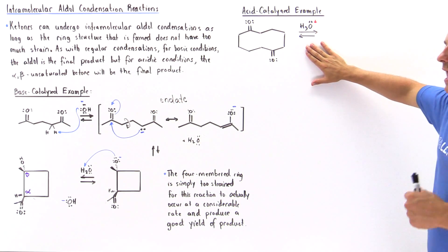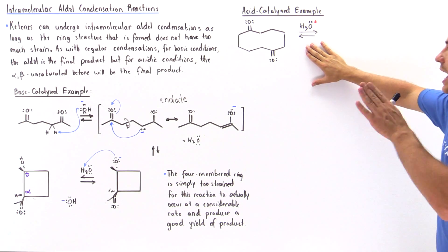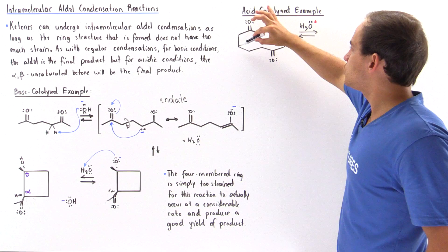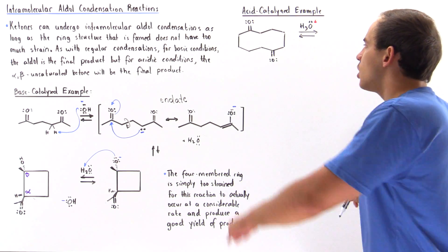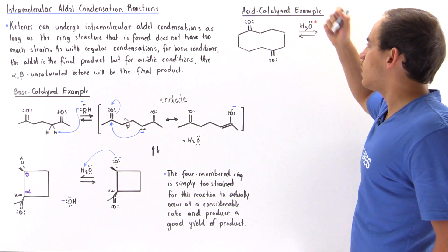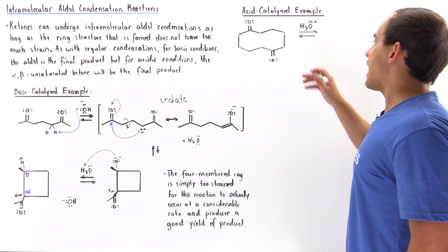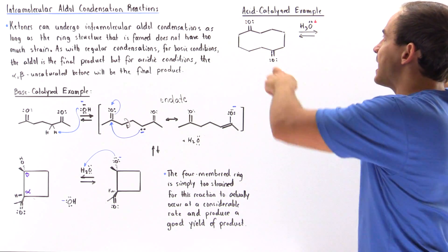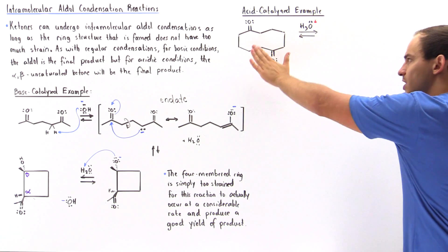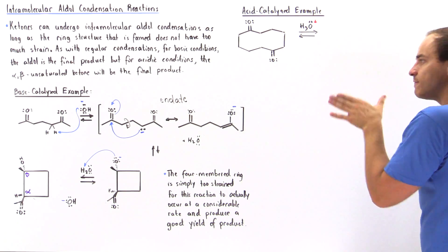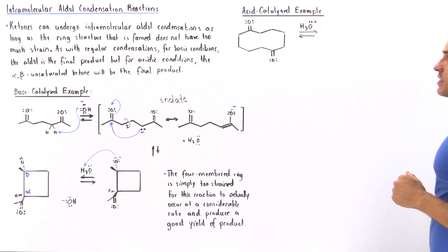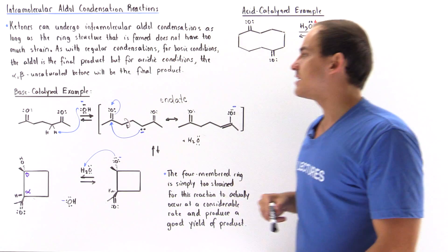Now let's take a look at the following acid-catalyzed reaction that does take place and work out its mechanism. We have a 10-carbon ring with two carbonyl groups. One will act as the nucleophile and the other will act as our acid. Because we're dealing with the acid-catalyzed reaction, remember two things: unlike the base-catalyzed case where the enolate acts as the nucleophile, here the enol acts as the nucleophile. The enol will then undergo a dehydration reaction in the presence of acid to produce the final product, our alpha-beta unsaturated ketone.